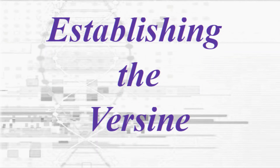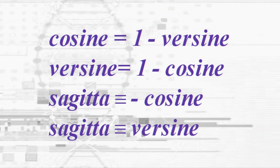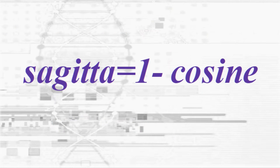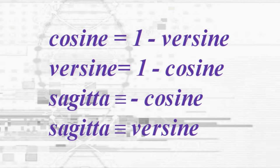The versine is defined as: versine = 1 − cosine. This obscure, seldom-discussed trigonometric function is one of the most powerful operators in QUIC. QUIC uses the convention of naming it the versine when it interacts parallel to the cosine, and the name sagitta when it interacts orthogonally to the sine. The sine and sagitta are orthogonal Tavassian conjugates. The cosine and versine are linear Tavassian conjugates.